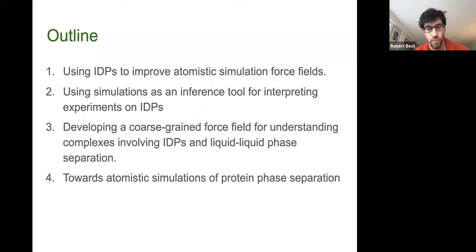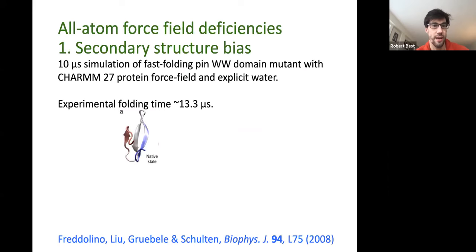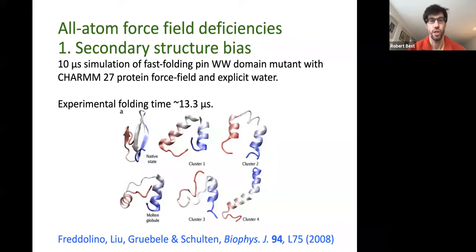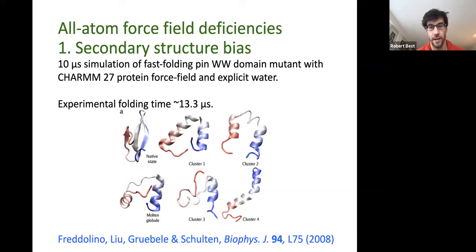Two main issues exist in many force fields to this day. The first is a secondary structure bias revealed in folding simulations — shown here in old simulations from Klaus Schulten's group, where they tried to fold a WW domain but instead got helical structures. This could be traced back to the CHARMM22 CMAP force field having a propensity for forming helices.